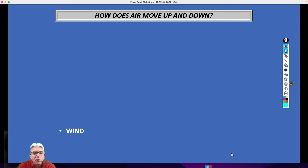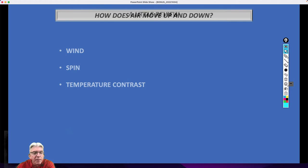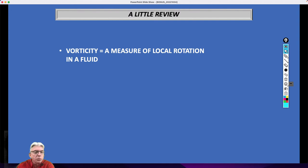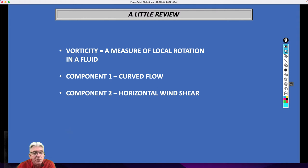Let's take a look at the three elements that combine to give us an idea as to where those areas are going to be. First of all, the wind. Number two, the spin in the atmosphere. And number three, the amount of temperature contrast. A little review here: first of all, vorticity, which we've talked about before, is a fancy word for spin or a measure of local rotation in a fluid. The air is considered in the scientific community to be a fluid. Component one of vorticity is curved flow. If the isobars are curved, the flow is going to be curved along with it. Component two is horizontal wind shear.